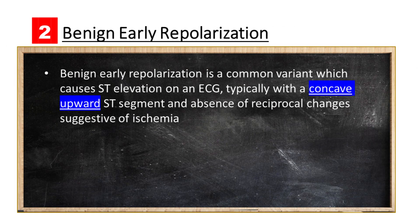Benign Early Repolarization, BER, is a common variant which causes ST elevation on an ECG, typically with a concave upward ST segment and absence of reciprocal changes suggestive of ischemia.